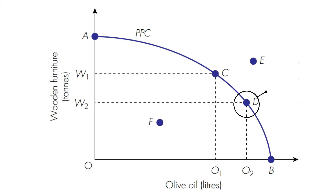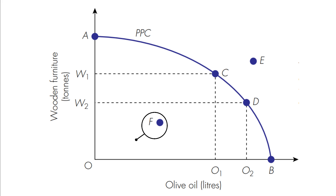At point D, W2 tons of wooden furniture and O2 liters of olive oil is produced. We have two other points, point E and point F. Point E is beyond the production possibility curve, which means that we don't have the resources required to make those certain goods — we call this point unattainable. Point F is a point within the production capacity of the economy, meaning we can produce both olive oil and wooden furniture without any opportunity cost because we are not using all the resources.